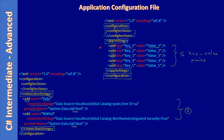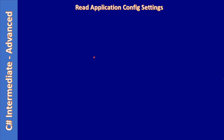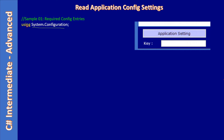There are many other settings but here we took two sections for exploration purposes. To use the application configuration file we need to use classes in the System.Configuration namespace. Here we will provide the key name, say for example key one, then we will click on the application settings button.